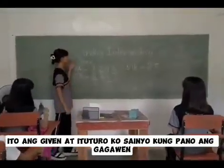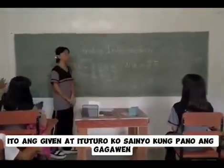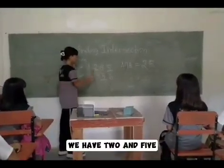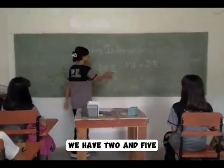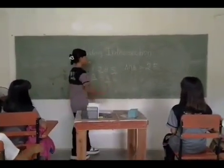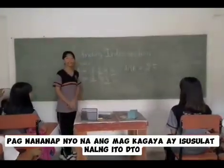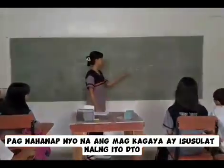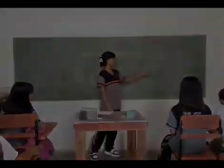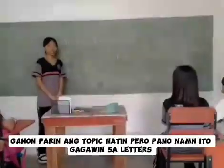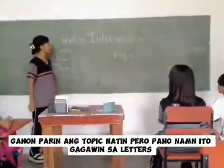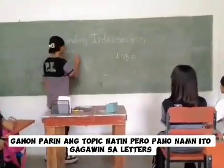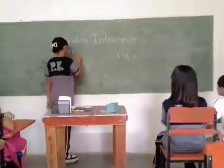Ito ang given at ito-ruh mo sa inyo kung paano gagawin. We have two and five. Pag nahanap mo na ang magkagaya, isusulatan mo na lang yung pagdito. Rule and five. Pero paano naman ito gagawin sa letter? May example akong...